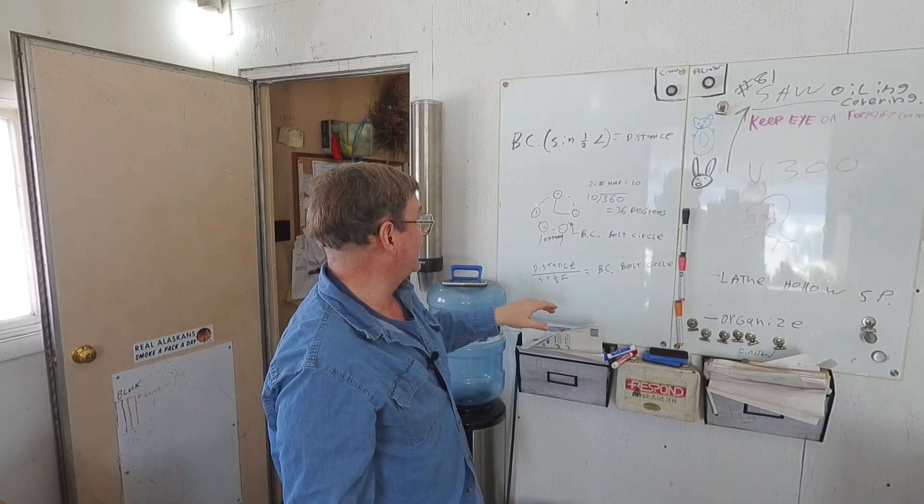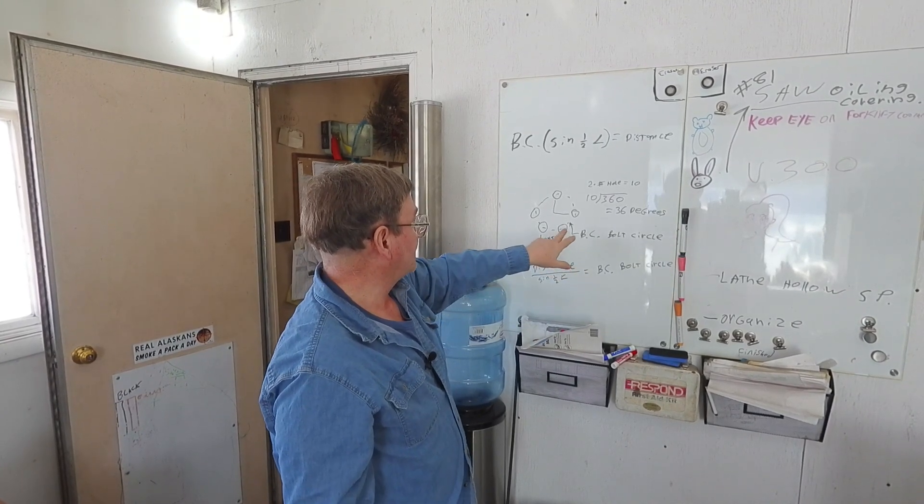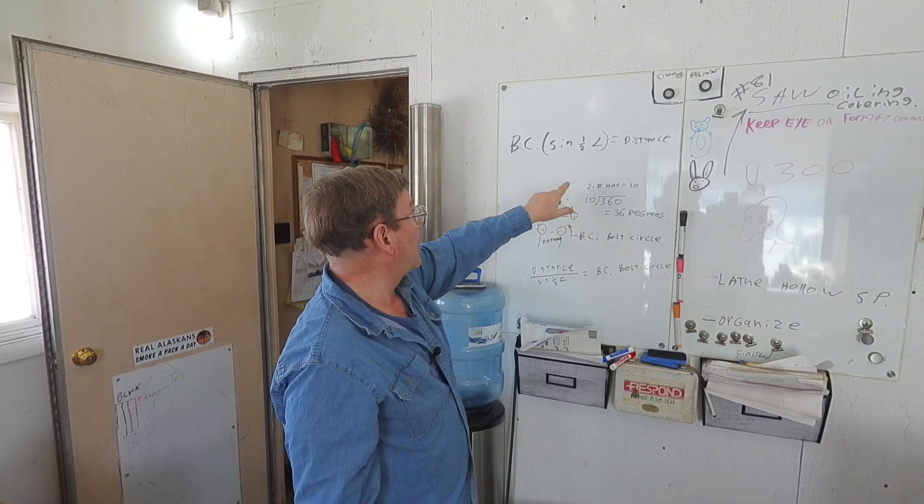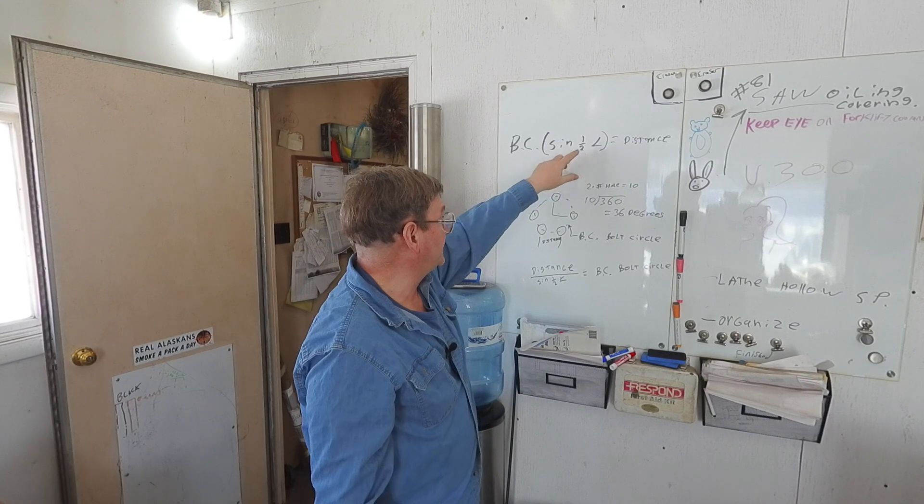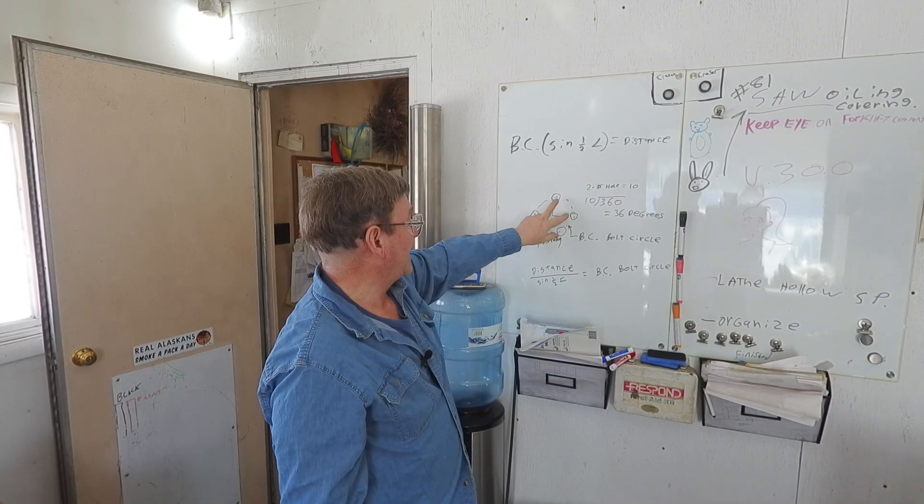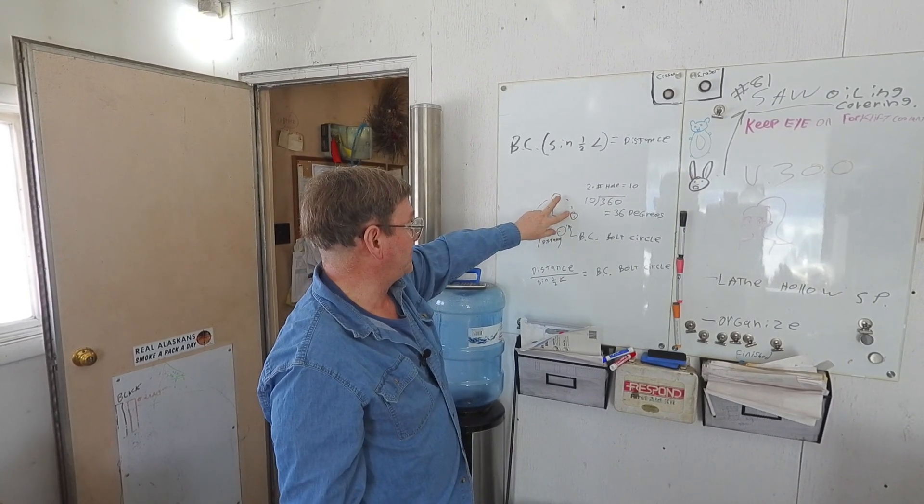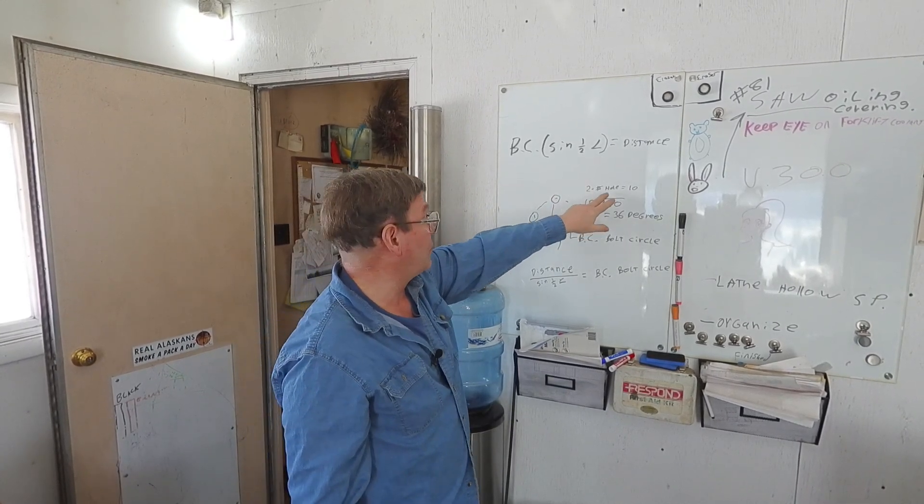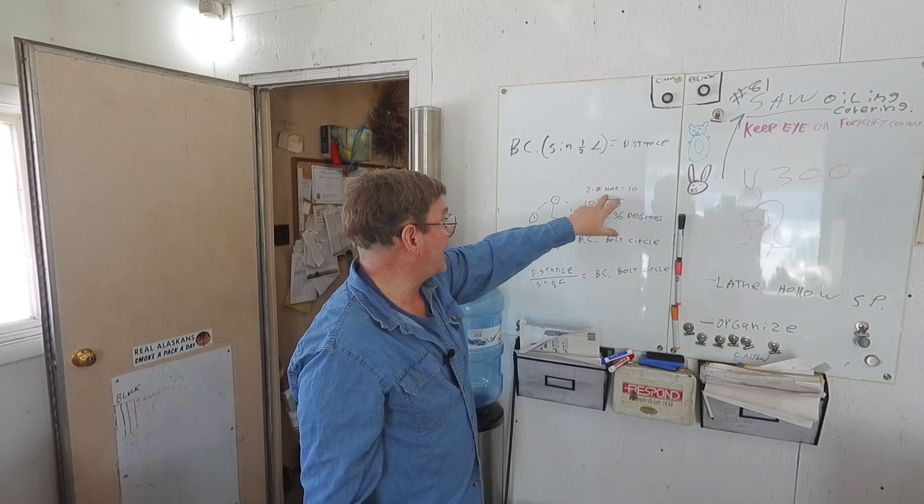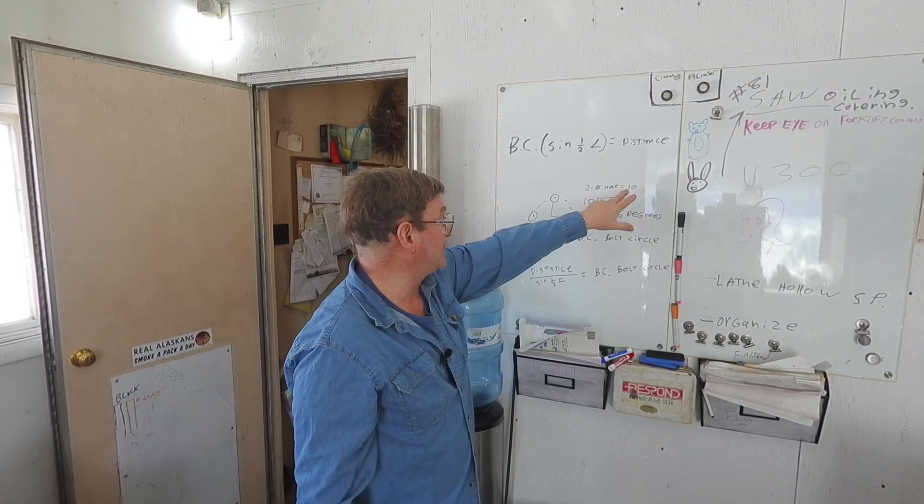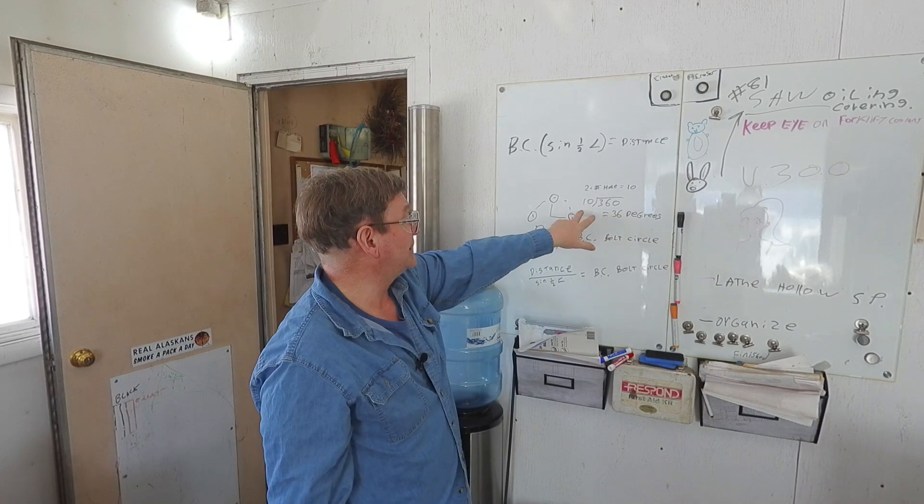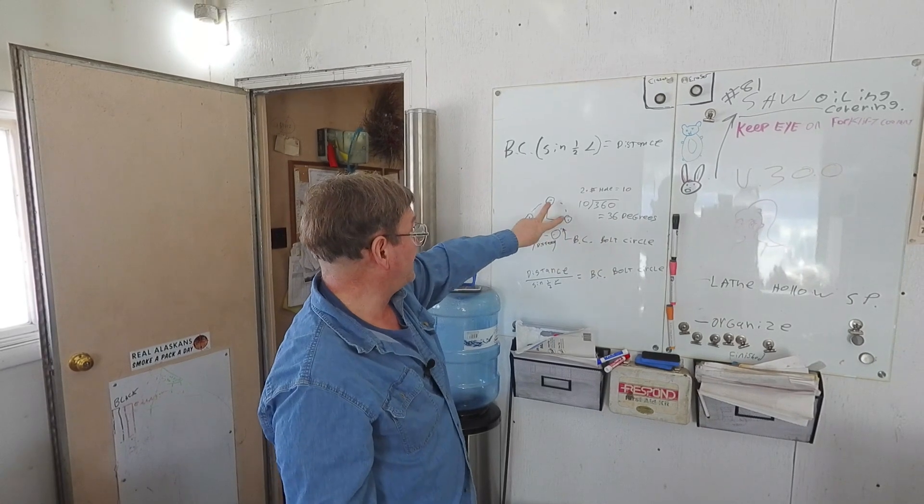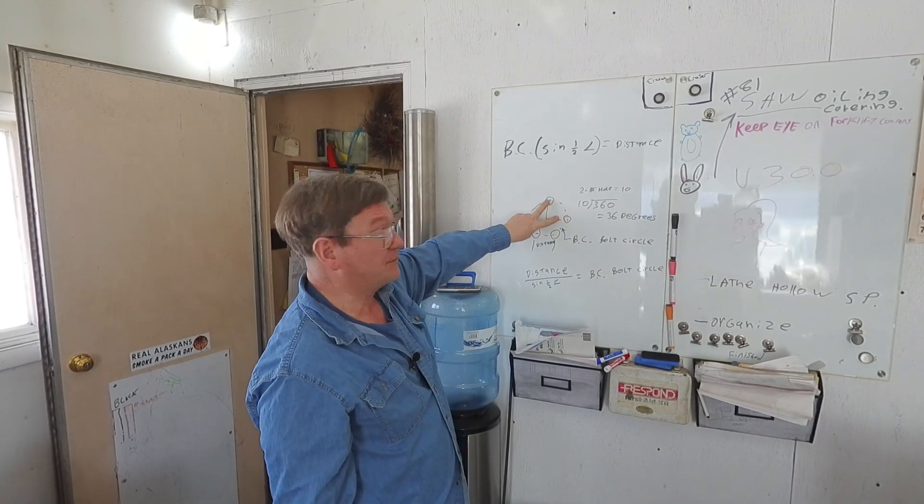So in this case here, if we've got five holes, our angle in between the holes would be half of the distance between the two holes, or if we just double the number that we're working with. So our holes, which is five holes times two equaling ten, we take that ten and divide it by 360 gives us 36 degrees. The angle between these holes is actually going to be 72.